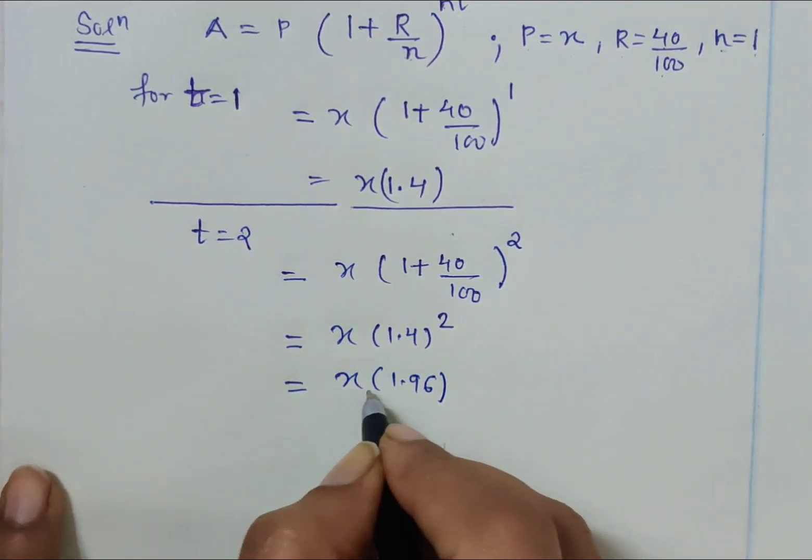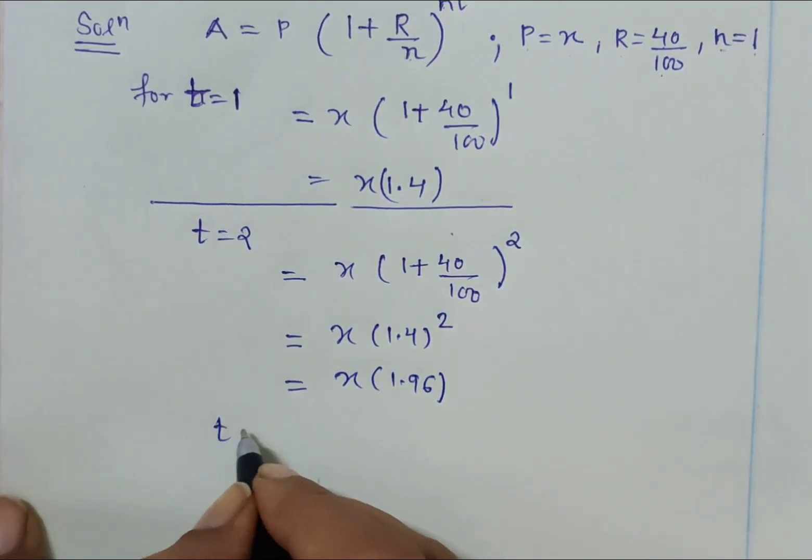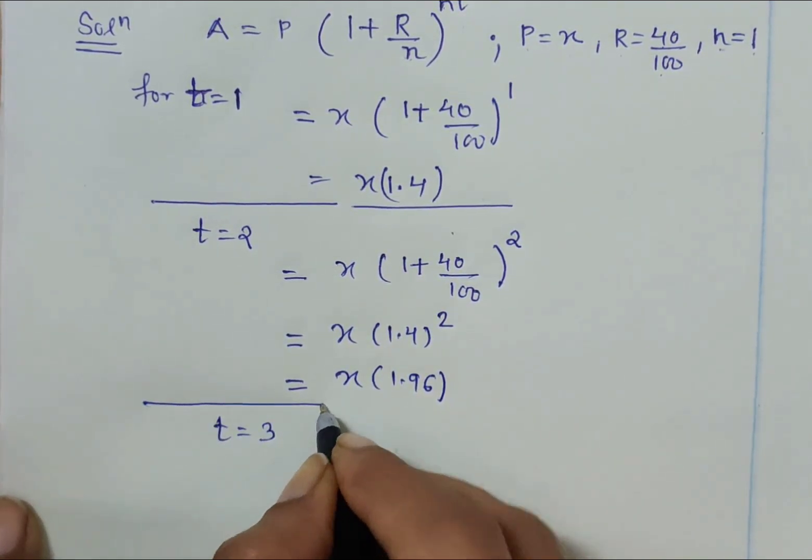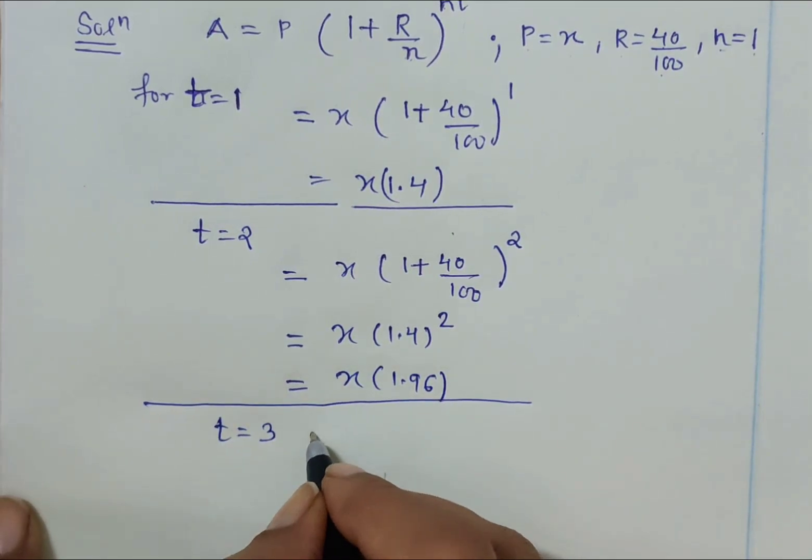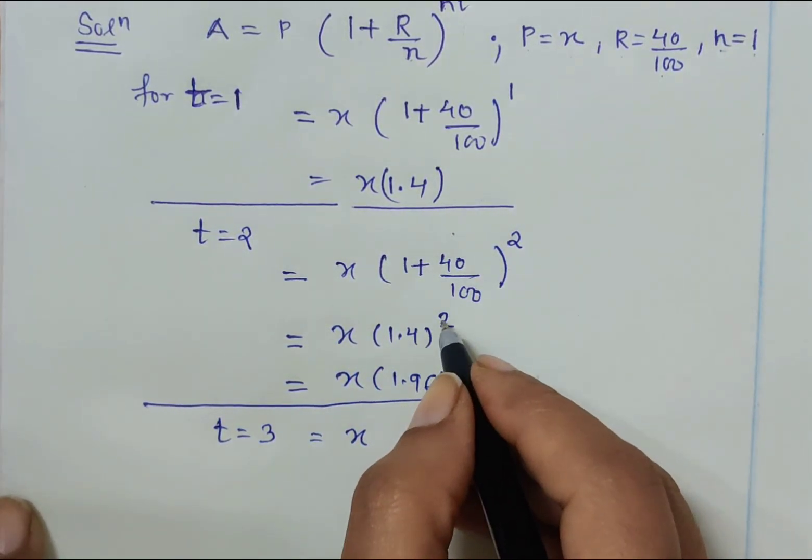So let's calculate for t = 3. For t = 3, when we calculate we get x times 1.4 cubed.